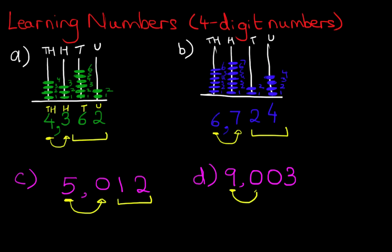Nine thousand and, well, there are no hundreds. There are no tens. It's only three. Three units. So, we say, nine thousand and three. Nine thousand and three.